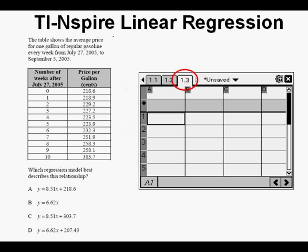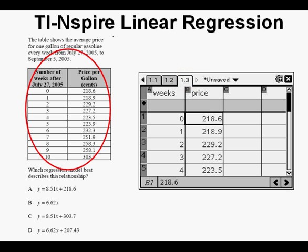Now I opened up another page, a list and spreadsheet page again. I left the earlier work on the file and this is page 1.3 here on the tab above. Next I entered all the data from the table with weeks at the top of one column and price at the top of the other column. You can't see the points below week 4 but they are all entered in, all 11 points.